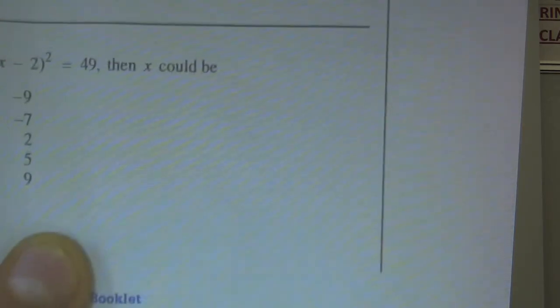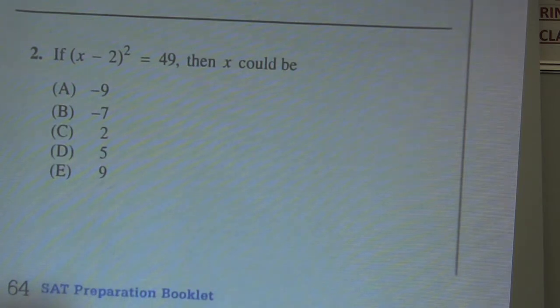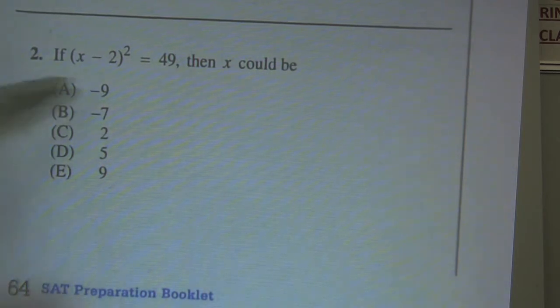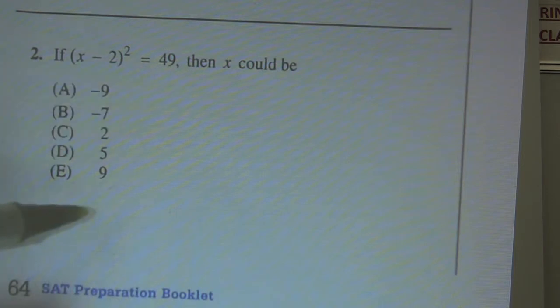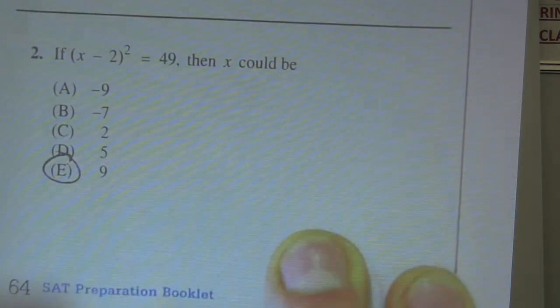Number 2: if (x minus 2) quantity squared is 49, then x could be — okay, this one's just plugging in numbers. Plugging in numbers is a great SAT strategy. I just plug in the numbers: negative 9 minus 2 is negative 11, that's not 49 when I square it. Negative 7 minus 2, that's not it. 9 minus 2 is 7, and 7 squared is 49. Choice E.